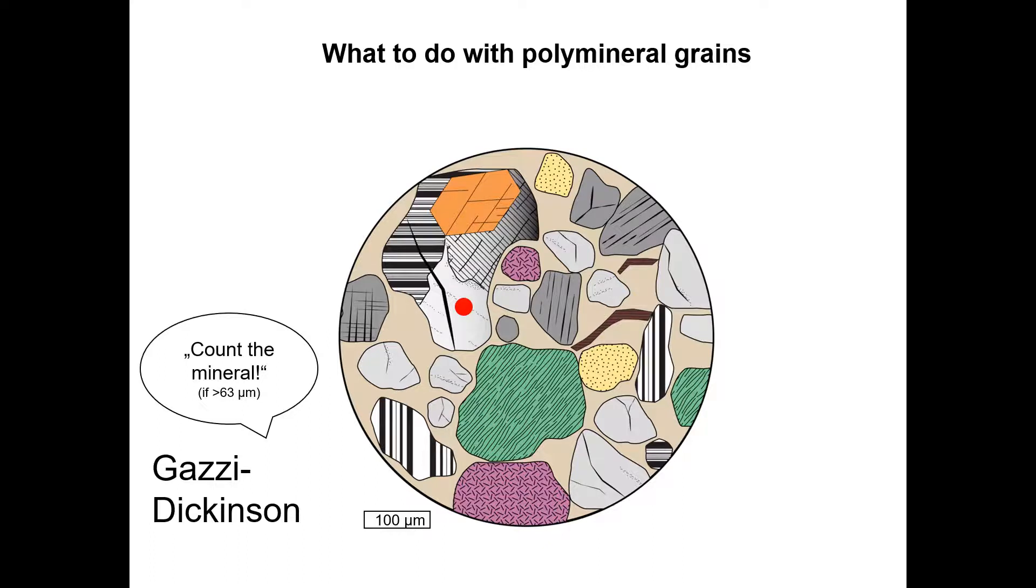The second method is sometimes called the Folk or the Indiana method, with reference to the sedimentary petrologist at Indiana University that used this method. Here, every polymineral phase is considered a rock fragment and should be counted as such, no matter its grain size.